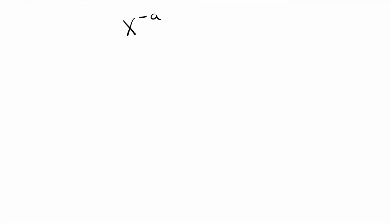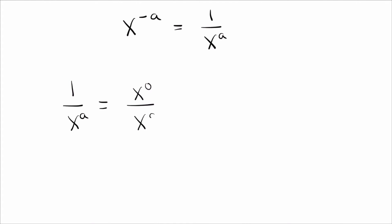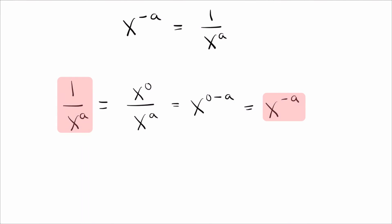There's nothing special about the negative one power. If you do x to the negative a for any number a, you can show that this has to equal one over x to the a. You can do it exactly the same way: start with one over x to the a, rewrite one as x to the zero power, then take the power on top, subtract the power on the bottom, and you get negative a.